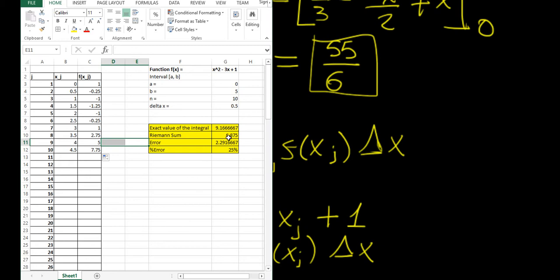Our Riemann sum turns out to be 6.875 and we notice that the percentage error is quite significant, actually 25%. That's a very large error. In any application we would never want an error as large as that. Obviously using 10 rectangles was not a good idea.